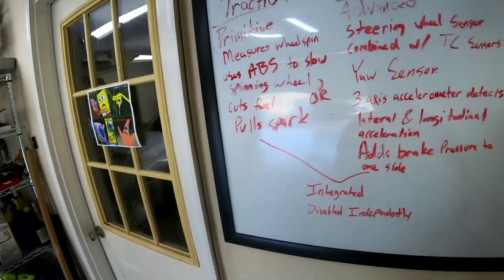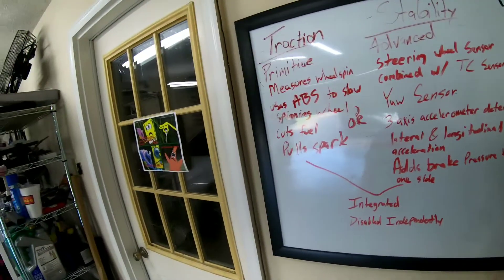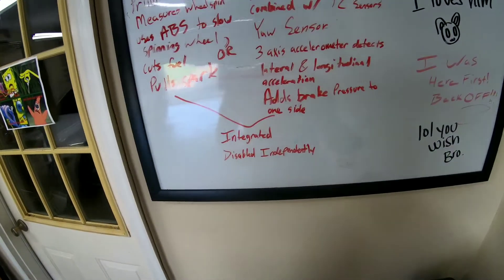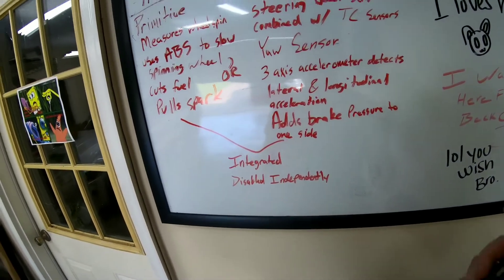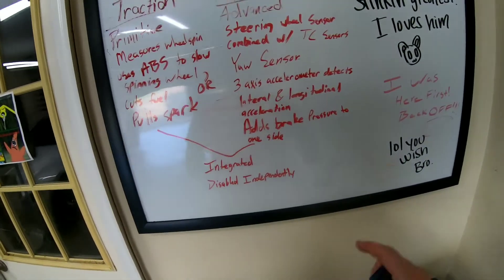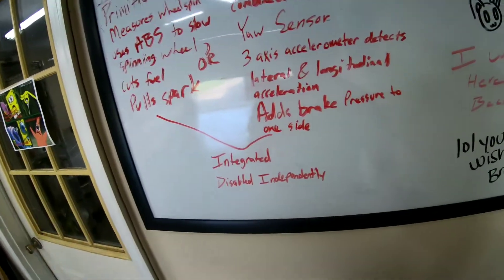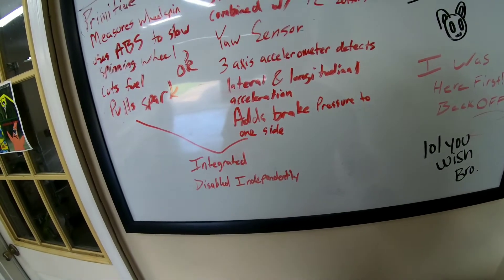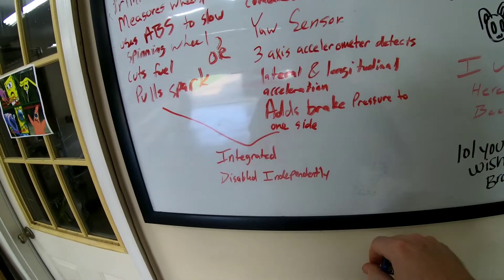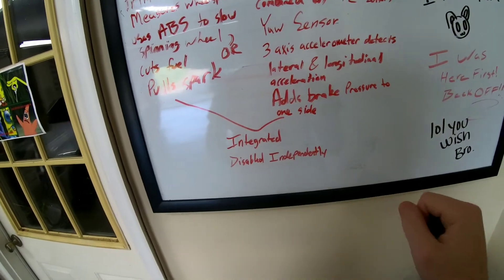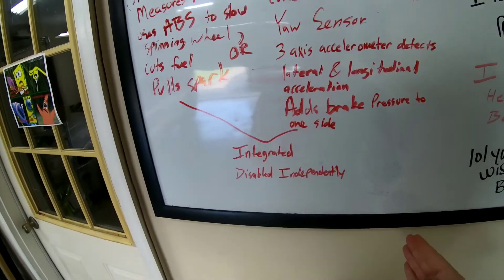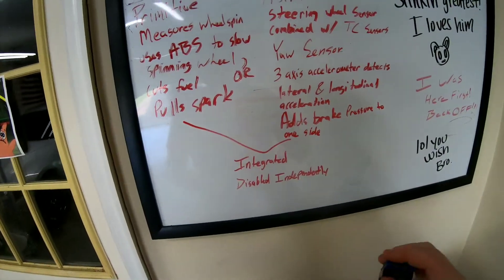Alright, so that's traction control — that's it. It sounds pretty simple because it really is. Now here's the complicated stuff: stability control. Stability control is like the big brother of traction control. It uses a sensor in your steering wheel to detect what angle you have it at, and compares that to the position of your wheels to make sure everything is still in line.